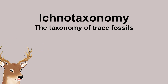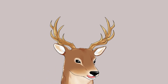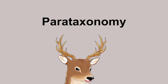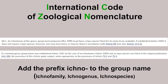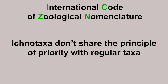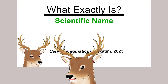By the way, ichnotaxonomy is the study of the taxonomy of ichnotaxon. It's part of ichnology, which is the study of trace fossils. Since most of the time we will never be sure which animal corresponds to which trace, ichnotaxon are mostly not correlated to taxa in mainstream taxonomy — which means it's a parataxonomy. That's why it's not a popular subject. But still, it's regulated by the ICZN, though it doesn't share the principle of priority. Which means even if an ichnotaxon corresponding to an animal is described earlier than the animal itself, that animal doesn't have to use the ichnotaxon name.